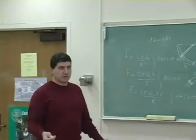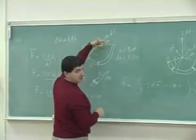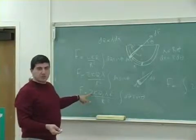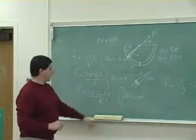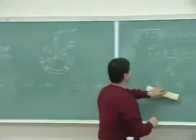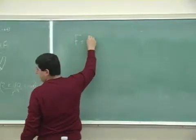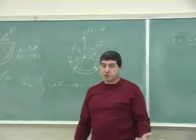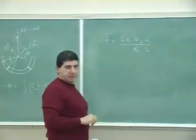Now we can integrate. The limits go from 0 to π/2 — we don't integrate the other half because we already accounted for it using symmetry (the factor of 2). So the integral is from 0 to π/2. After the r cancels, λ = q₁/L (total charge divided by total length), giving us 2k·q₂·(q₁/L)/r times the integral.